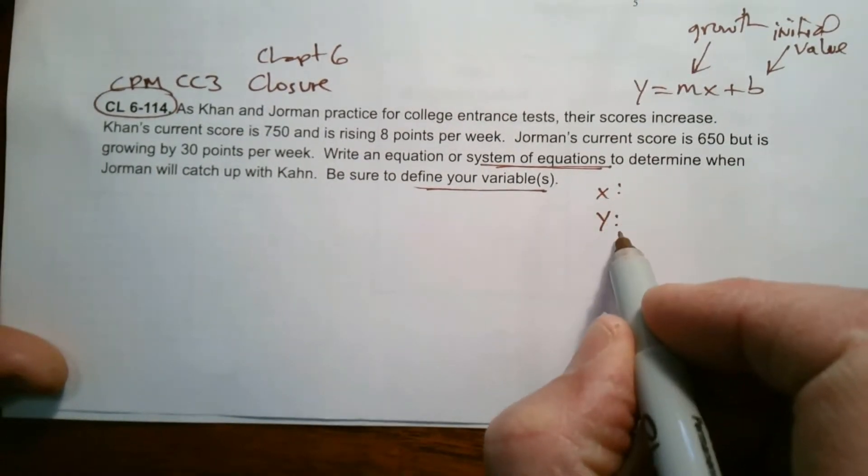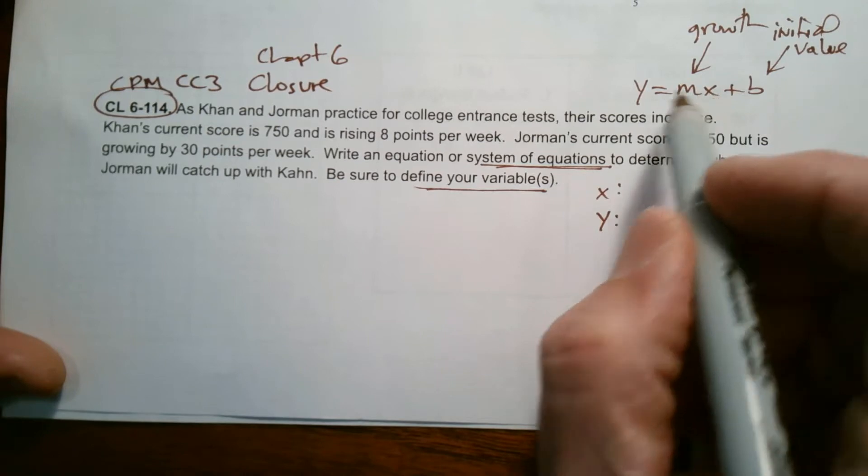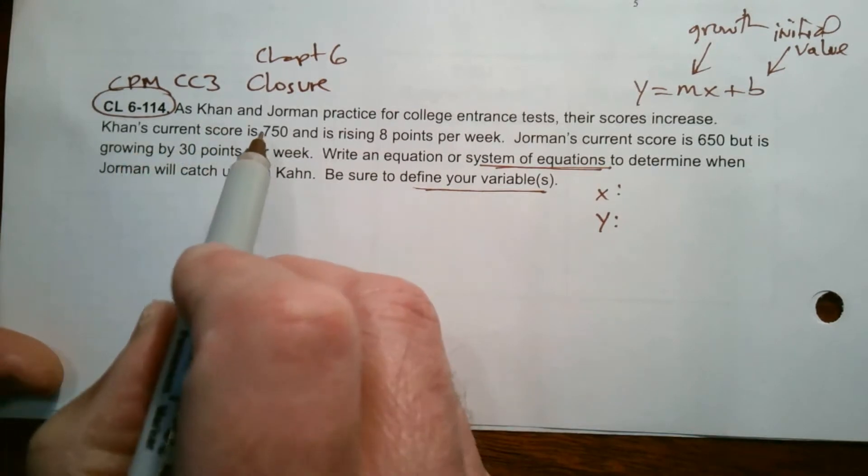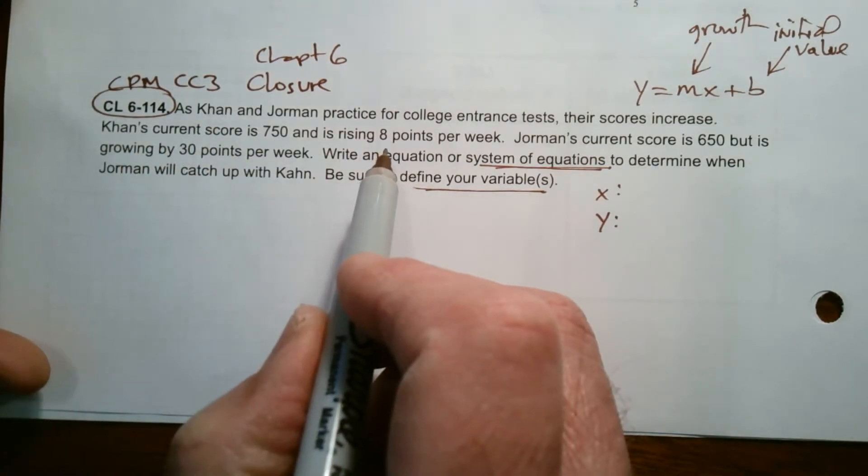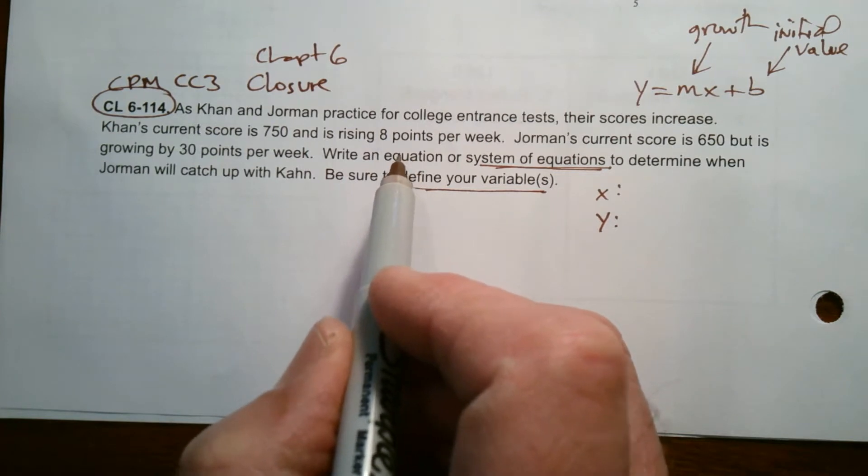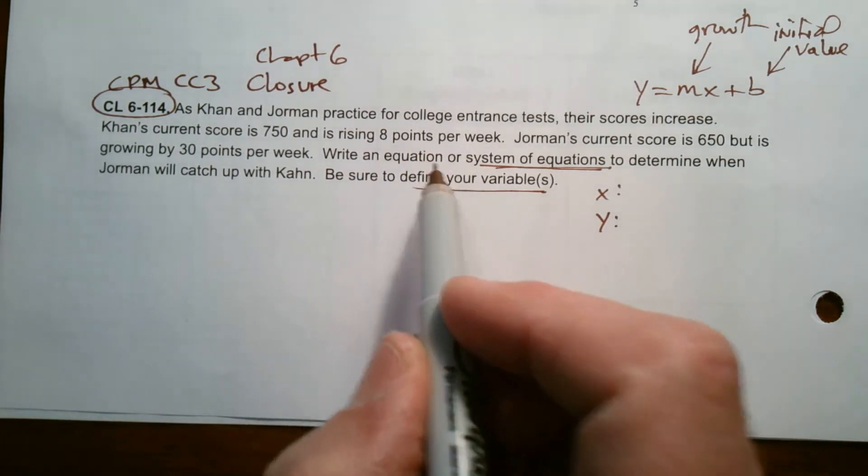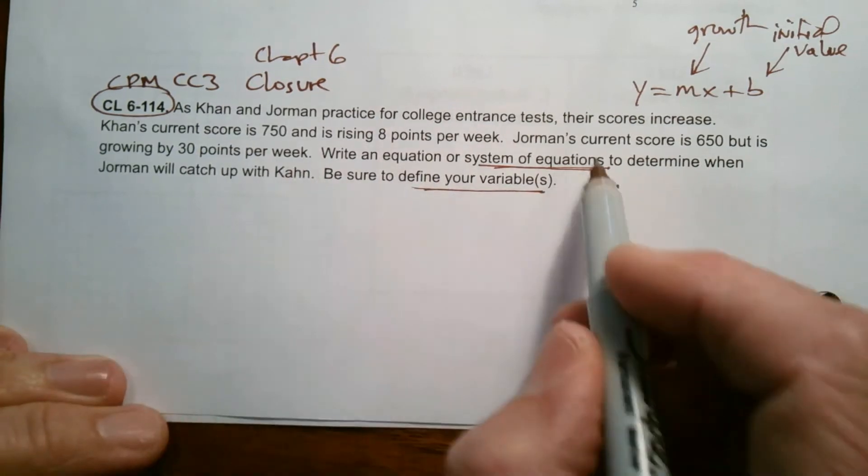So let's figure out which is going to be the X, which is going to be the Y. X has to do with the growth. So if we look, we're dealing with a score that then is rising 8 points per week.